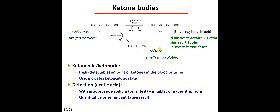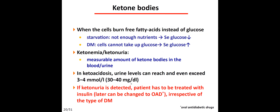In blood or urine, acetone can be detected by its characteristic odor. Labs measure beta-hydroxybutyric acid and acetoacetic acid levels. The ratio of acetoacetic acid to butyric acid is normally 3:1, but can shift to 7:1 in severe ketoacidosis. Detection is usually via a Legal test on strips or laboratory measurement of beta-hydroxybutyric acid levels.